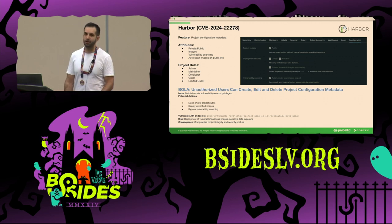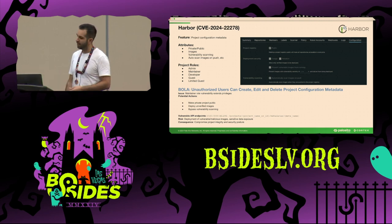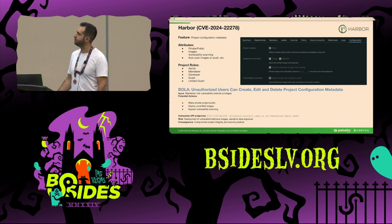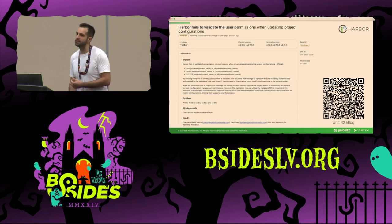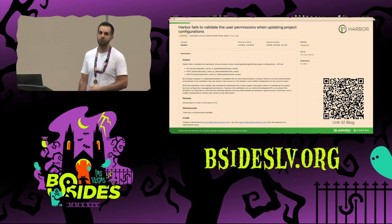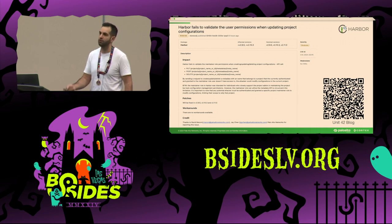The consequences can be really serious — a malicious maintainer can compromise the entire project integrity and security posture. Harbor recognized this vulnerability and issued a CVE about two weeks ago, publishing the details in their security advisory. If you want to read more about the technical details of this vulnerability and our methodology, you can scan the QR code to visit our blog.